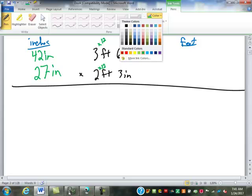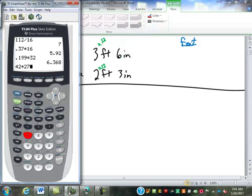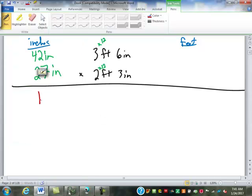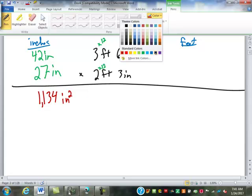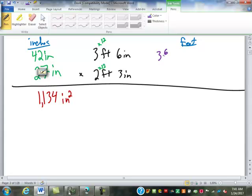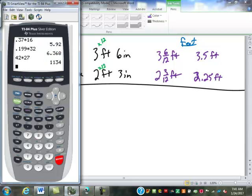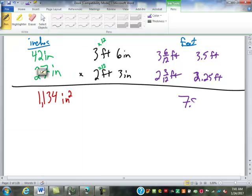So forty-two times twenty-seven, eleven thirty-four. And that is inches squared. If I were going to convert that all into feet, I would just put the inches over twelve, at three and six twelfths feet. Or to make it a decimal, three point five feet. Two foot three is two and three twelfths feet. Or two point two five feet. If I multiply that, three point five times two point two five, seven point eight seven five. And feet times feet is feet squared, or square feet.